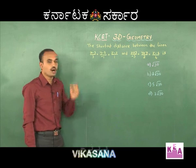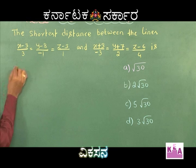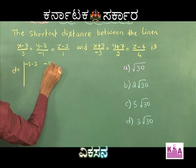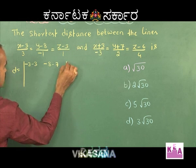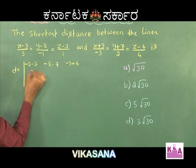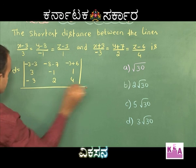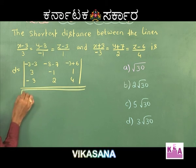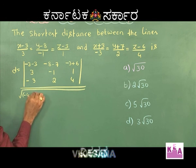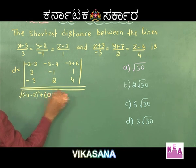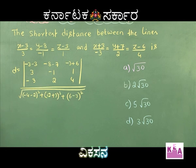Using the formula for the shortest distance between two lines, d equals the determinant with the first row (−3−3, −8−7, −3+6), and the direction vectors (3, −1, 1) and (−3, 2, 4) in the second and third rows, divided by the square root of [(4·(−1)−(−2))² + (3·4+3)² + (6−3)²].